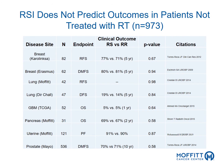Importantly, since the radiosensitivity index is specific to patients that have received radiation therapy, it has not been shown to predict clinical outcomes in patients who do not receive radiation therapy. The radiosensitivity index did not predict clinical outcomes in patients with breast, lung, glioblastoma, pancreas, uterine, and prostate cancer who were not treated with radiation therapy.